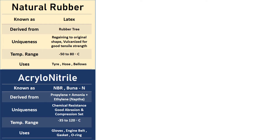The second rubber is acrylonitrile, known as NBR or BUNA-N. It is derived from propylene, ammonia, and ethylene — all from naphtha, which is a by-product of crude oil. Its uniqueness includes great chemical resistance, good abrasion resistance, and great compression set. The temperature range is minus 35 to 120 degrees Celsius. Uses include gloves, chemical-area gloves, engine belts, gaskets, and O-rings.